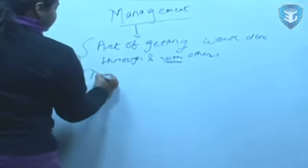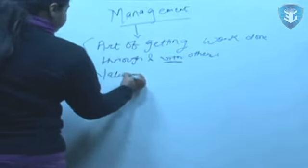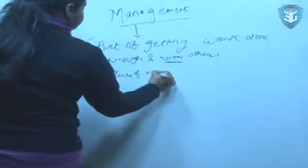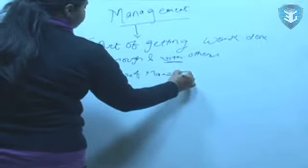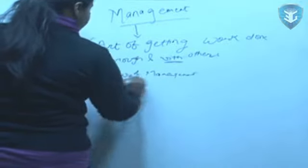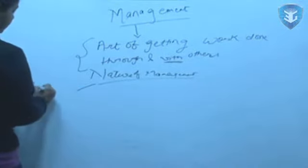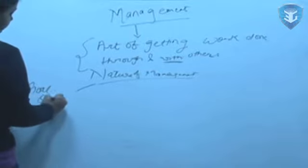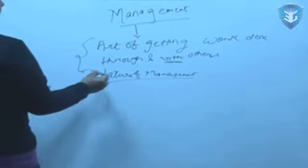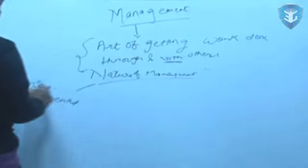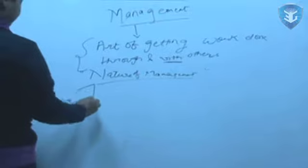Now, if you talk about the basic nature of management or the features of management, one you can say it is goal oriented because every manager has certain objective in mind for which he assigns work to subordinates.